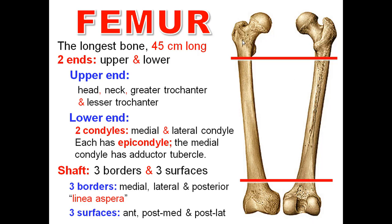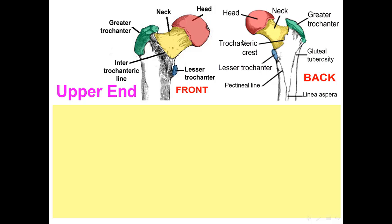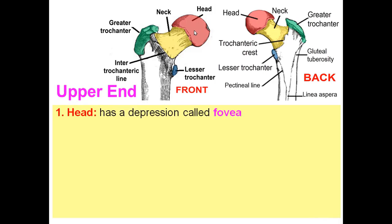The upper end of the femur: the first part is the head. The head is directed upward and medially. It articulates with the acetabulum to form the hip joint. It has a depression called the fovea capitis.